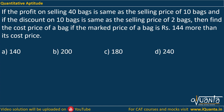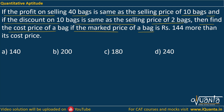The question is: if the profit on selling 40 bags is the same as the selling price of 10 bags, and if the discount on 10 bags is the same as the selling price of 2 bags, then find the cost price of a bag if the mark price of a bag is Rs. 144 more than its cost price.